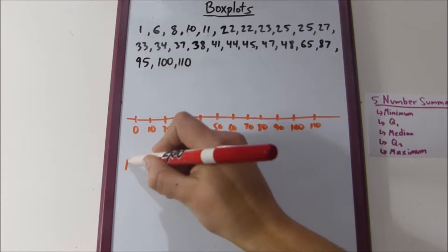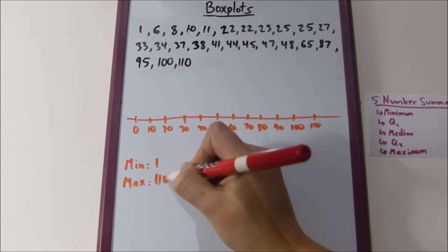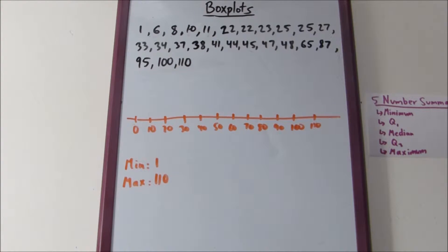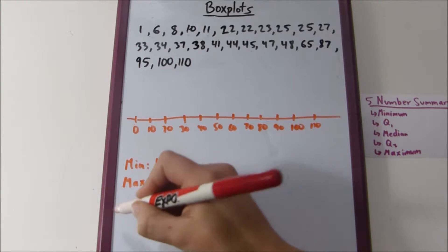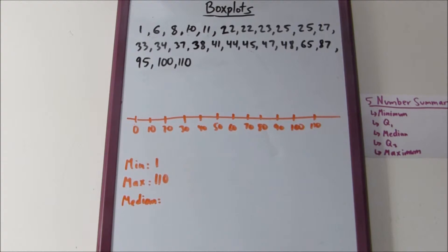We know that our minimum is one, and our maximum is 110. But don't plot anything on your plot yet, because you don't know if this minimum and maximum are outliers yet. You need to find the inner quartile range first. The next thing that I think we should find is the median. The first quartile and third quartile depend on the median, so finding the median first is a good idea.